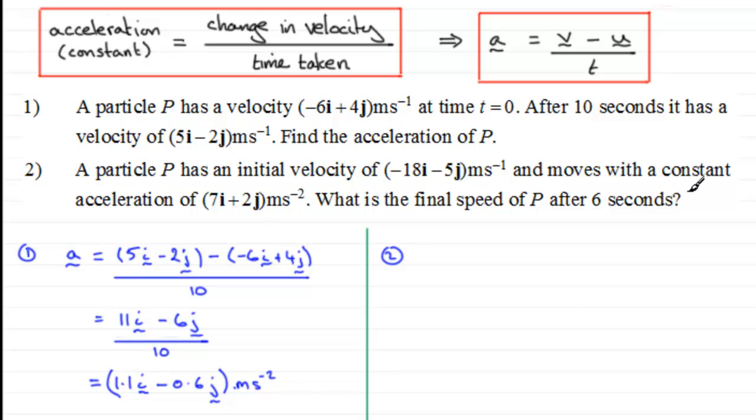In other words, we've got to find out what v is, and we can get v quite easily just by rearranging our formula up here. If we multiply both sides by t, we would end up with at equaling v minus u, and then if we add u to both sides, we finally get that v equals u plus at.